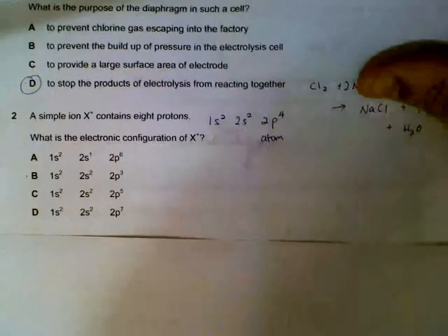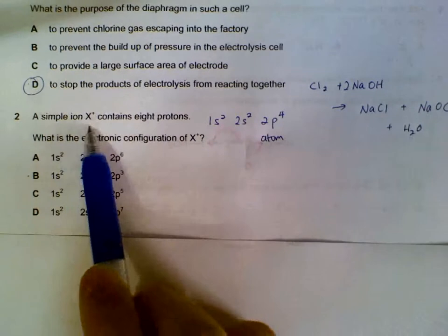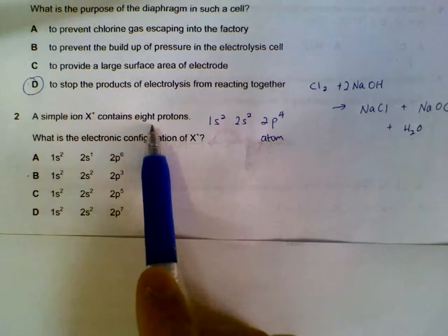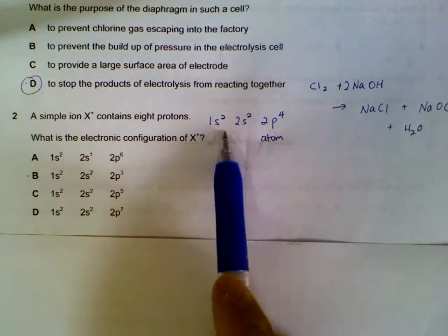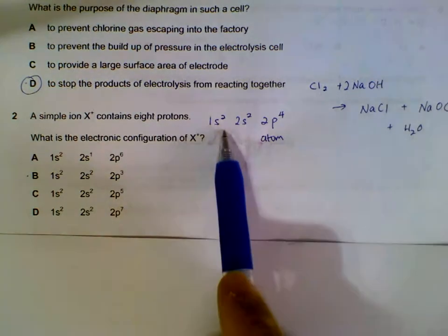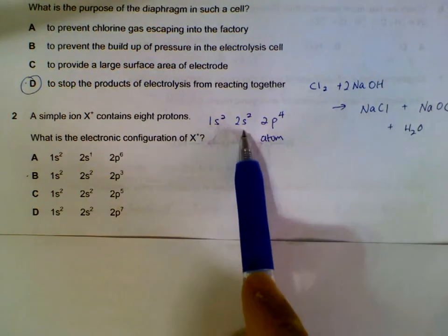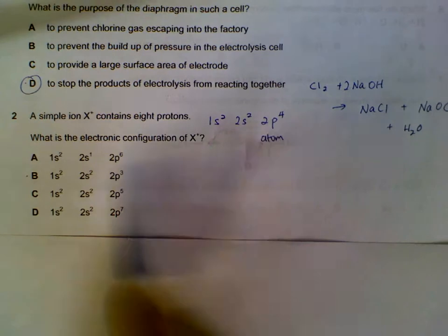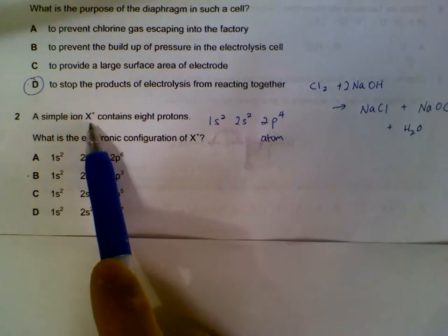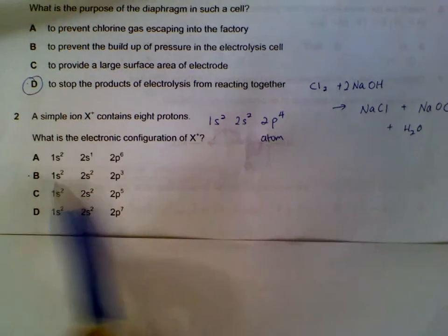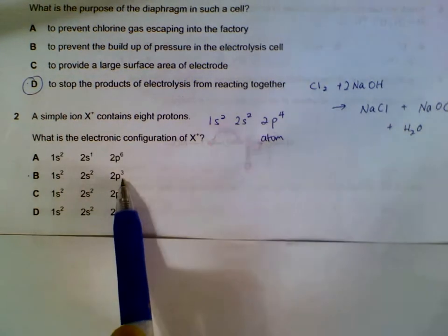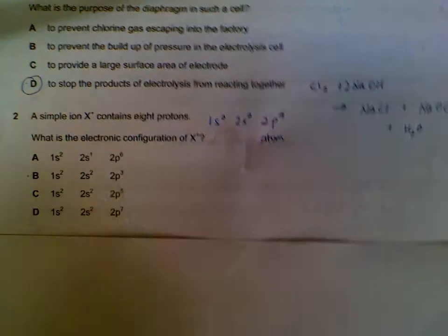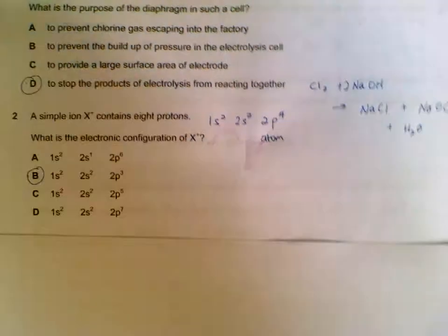Number two, an ion X+ contains eight protons. When it was an atom, its configuration will be 1s2, 2s2, and 2p4. To form an ion as X+, it will lose one electron. So it ends up with 1s2, 2s2, 2p3 after losing one electron to form X+.